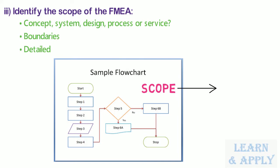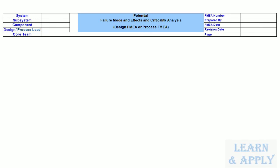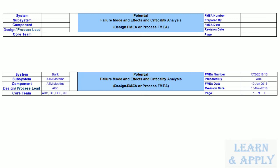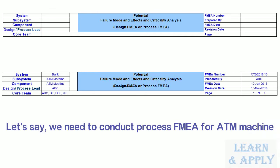From here on, we will use the word 'scope' to mean the system, design, process, or service that is subject to our FMEA. Once we have completed all these steps, fill in the identifying information at the top of the FMEA form. A typical format contains fields for system, subsystem, component, core team, FMEA number, prepared by, FMEA date, revision date, and respective page number. It also indicates whether it is a design FMEA or process FMEA. Let's complete all steps using a practical example — conducting process FMEA for an ATM machine.